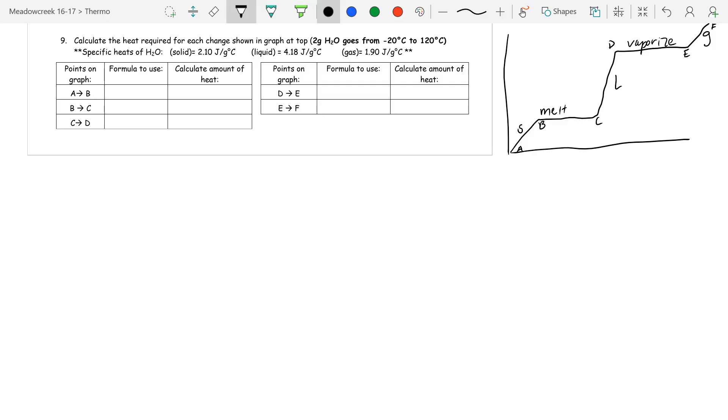That's just going to help us with figuring out which section of the graph we're working with. Now, anytime you have a change in temperature, so for example section A to B, C to D, or E to F, you're going to be using the formula Q equals MC delta T. You should know from class what these variables mean, but let's review.